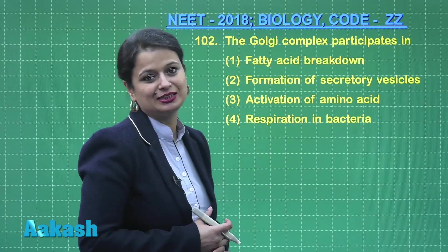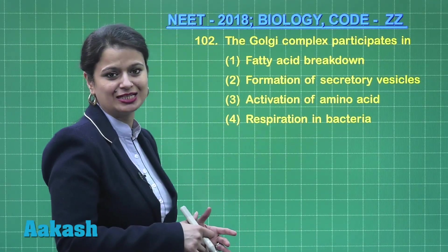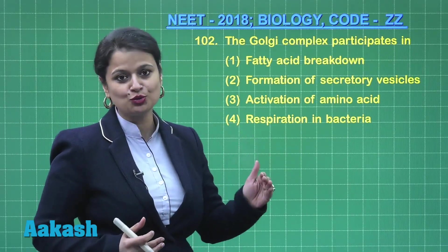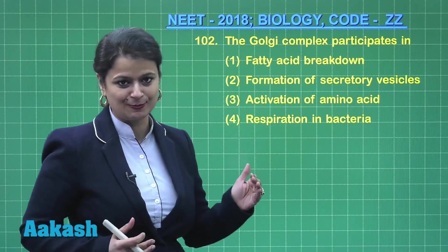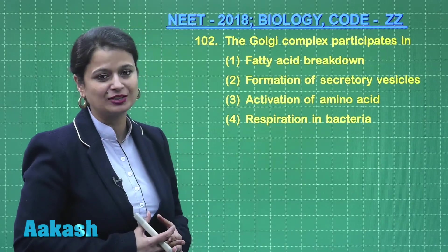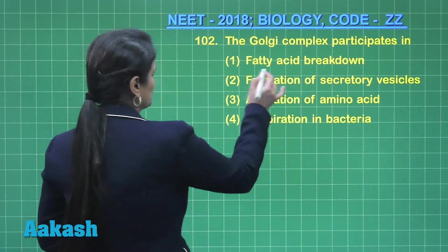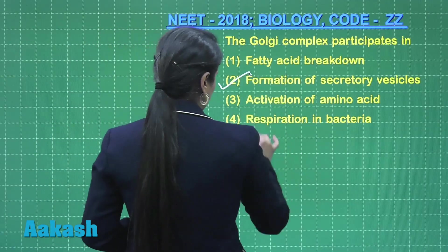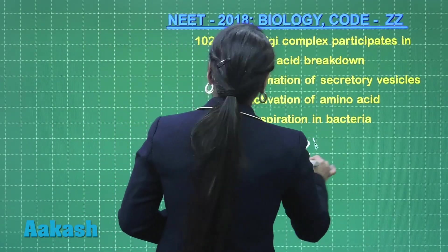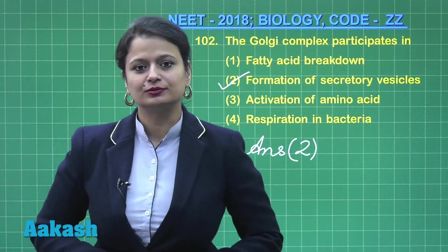Respiration in bacteria: some respiration takes place in the cytoplasm and some in mesosomes or the plasma membrane, because mitochondria are absent in bacteria. So the right answer for question 102 is option number 2.